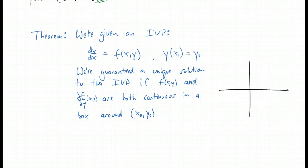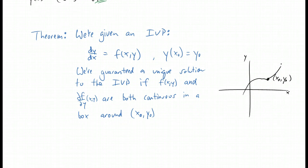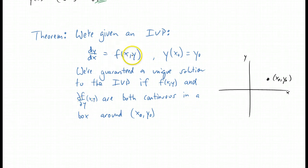Basically, what we have is some differential equation with a given initial condition corresponding to the point x-naught, y-naught. Whatever the solution is, it will pass right through that point. What this theorem says is that if this function f in the differential equation is continuous, and its partial derivative with respect to y is continuous in some box around this initial condition, then we're guaranteed a unique solution, at least inside that box.